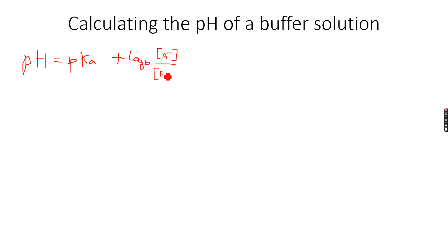Because if HA is a weak acid, then it will partially dissociate to form H+ ions and A- ions.